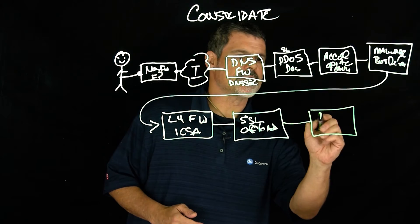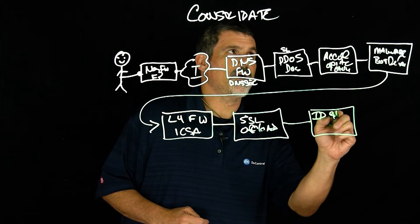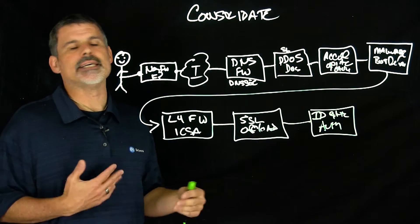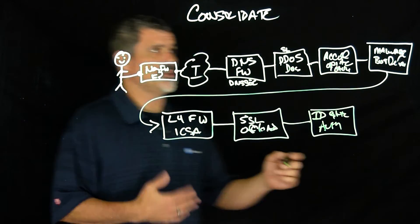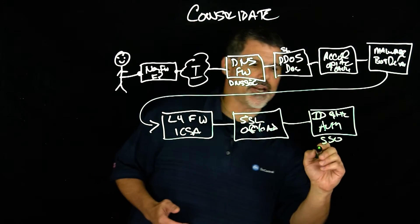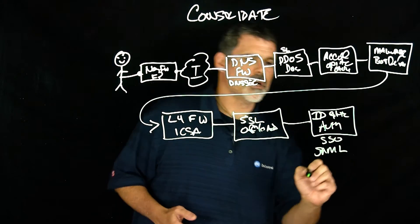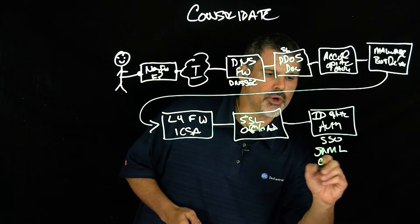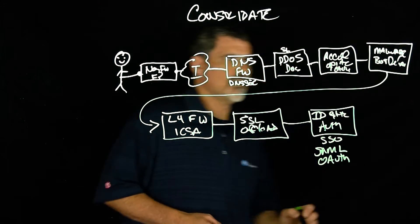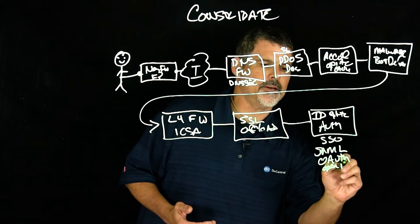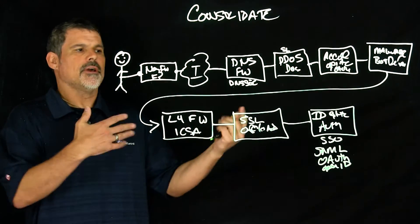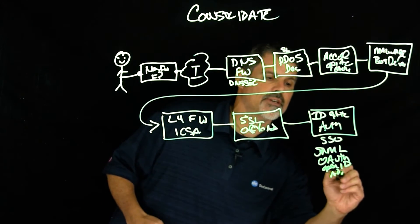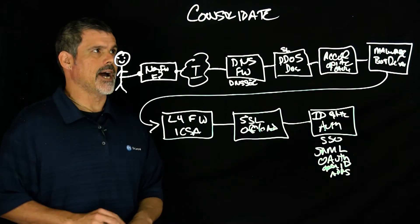Next is an identity gateway or authentication proxy. Authentication and identity gateway allows you to do things like single sign-on, exchange SAML tokens — either as an IDP (identity provider) or SP (service provider) — handle OAuth requests, OpenID, and more. It also supports Active Directory, LDAP, RADIUS, ADFS, and those sorts of integrations for the identity gateway.